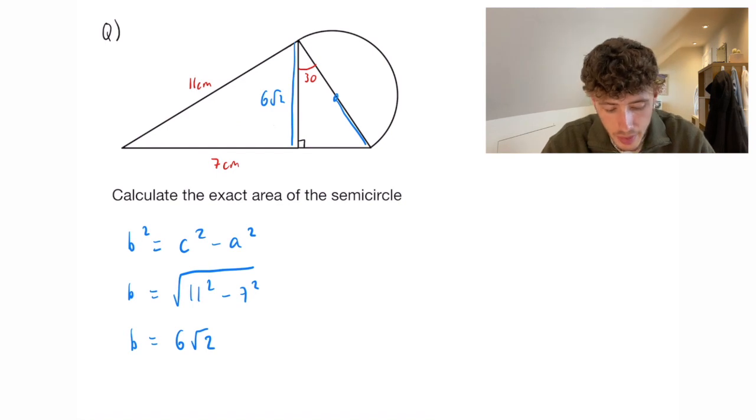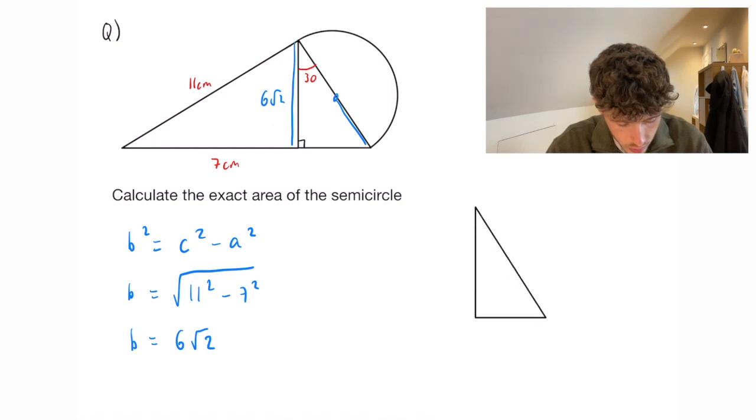Now from here it might be helpful to just redraw our triangle on its own. So here is what it will look like, we have the right angle here, 6 root 2, the 30 and we want the h here.